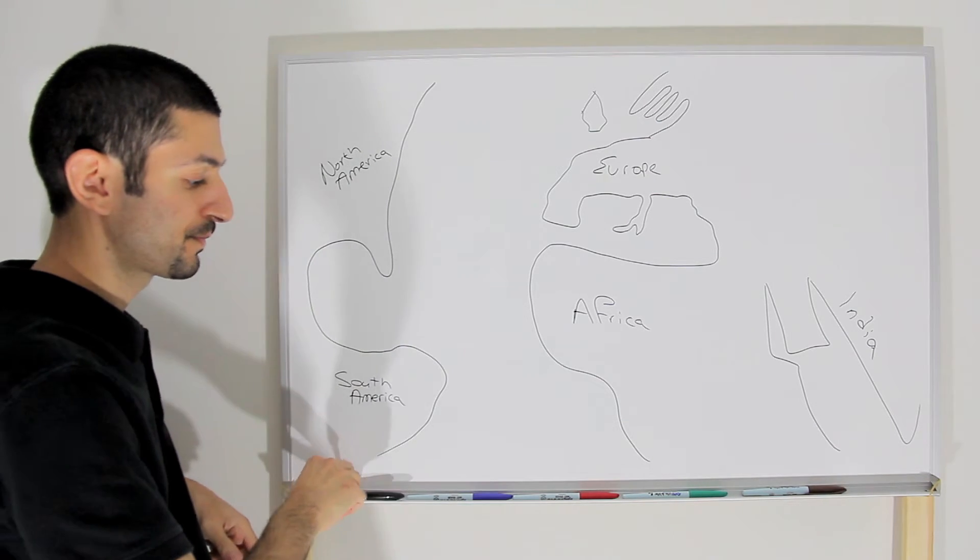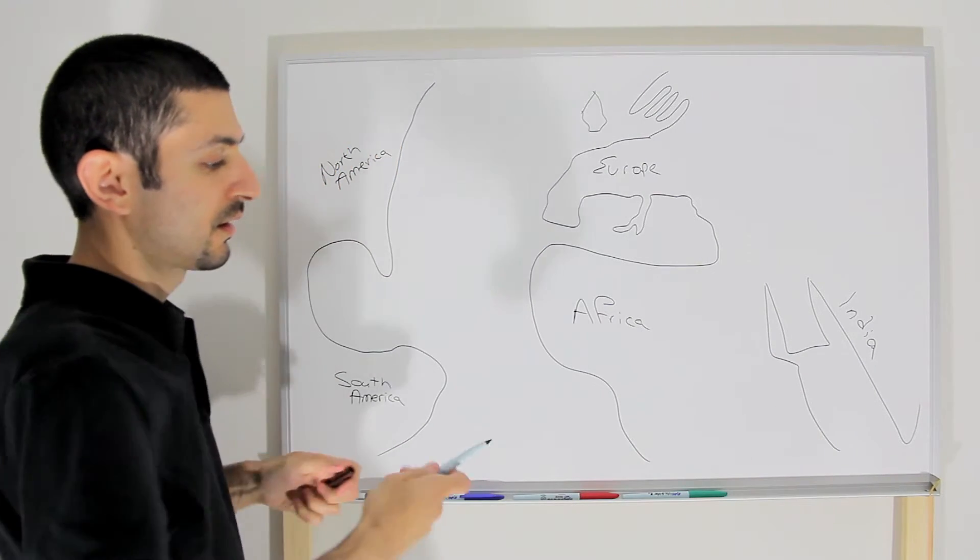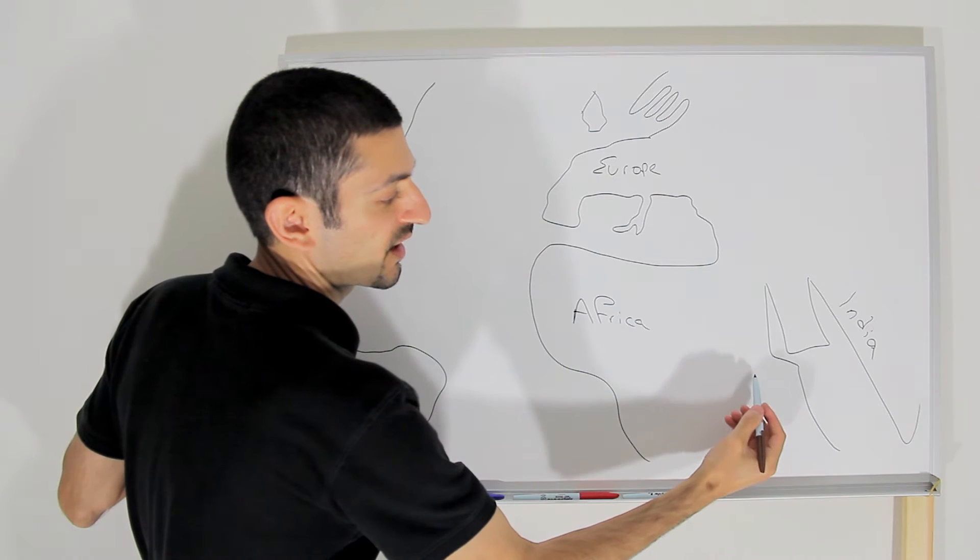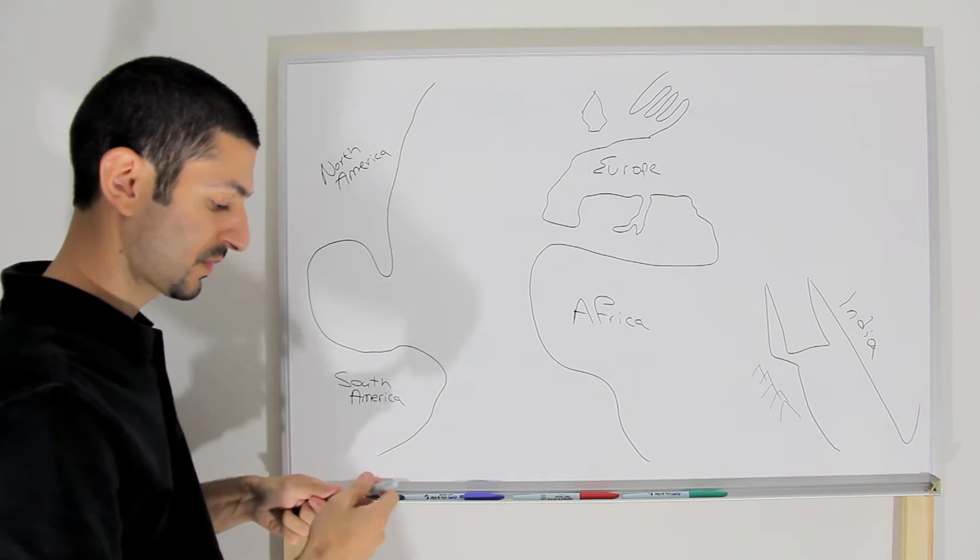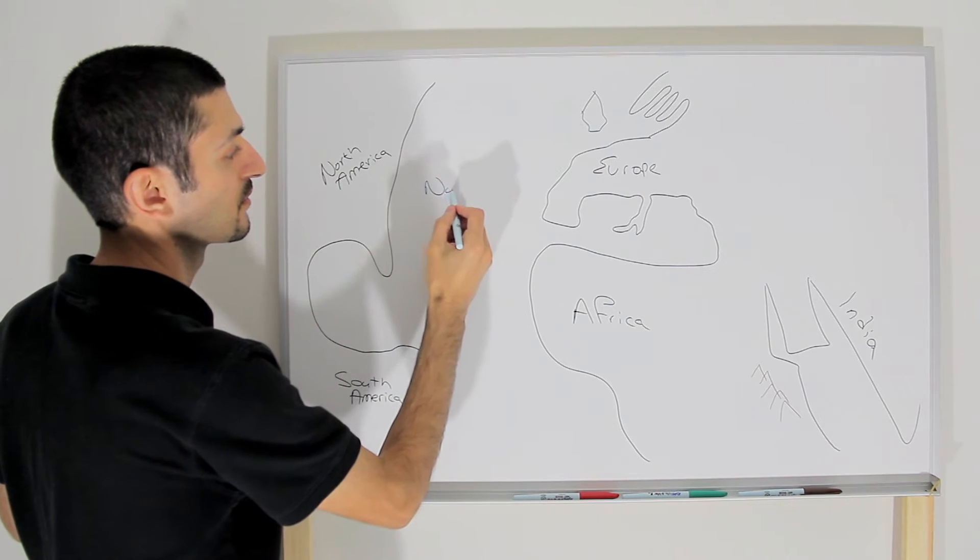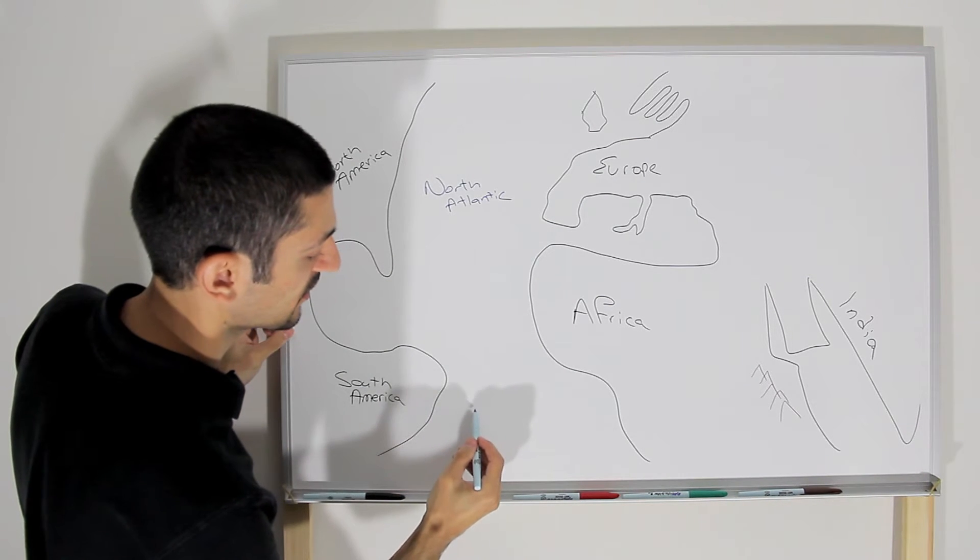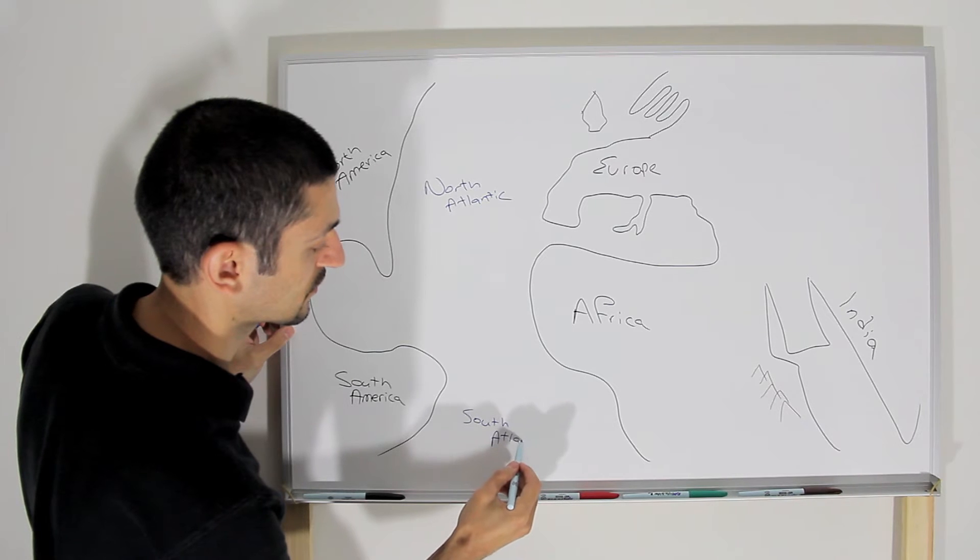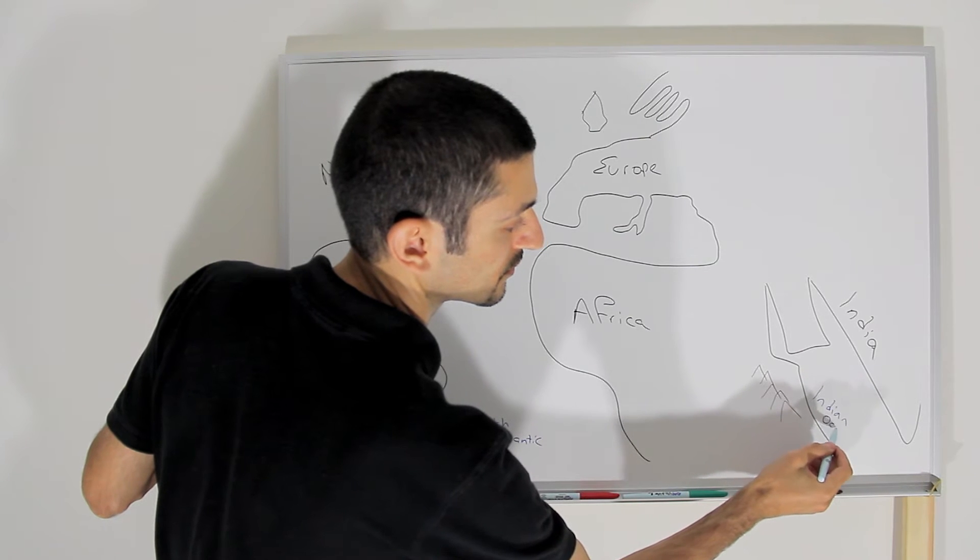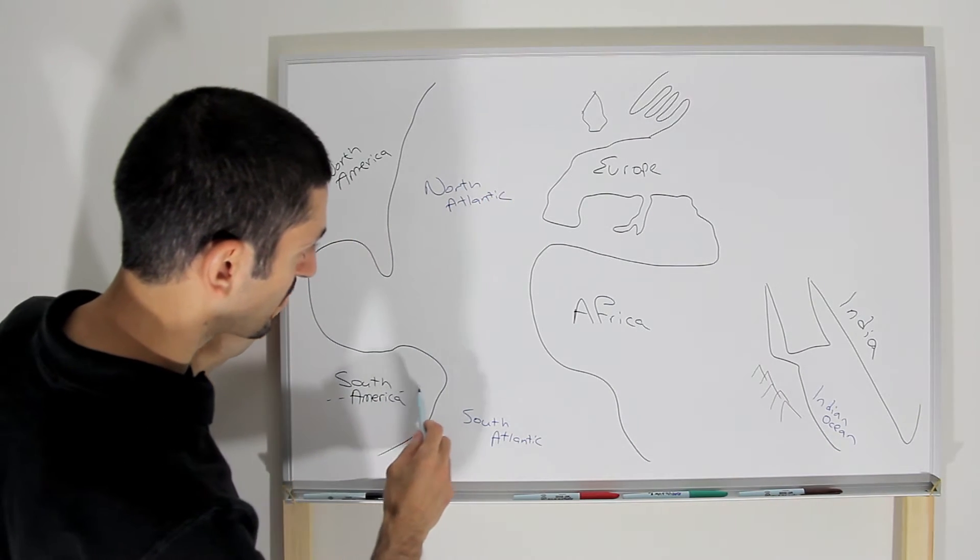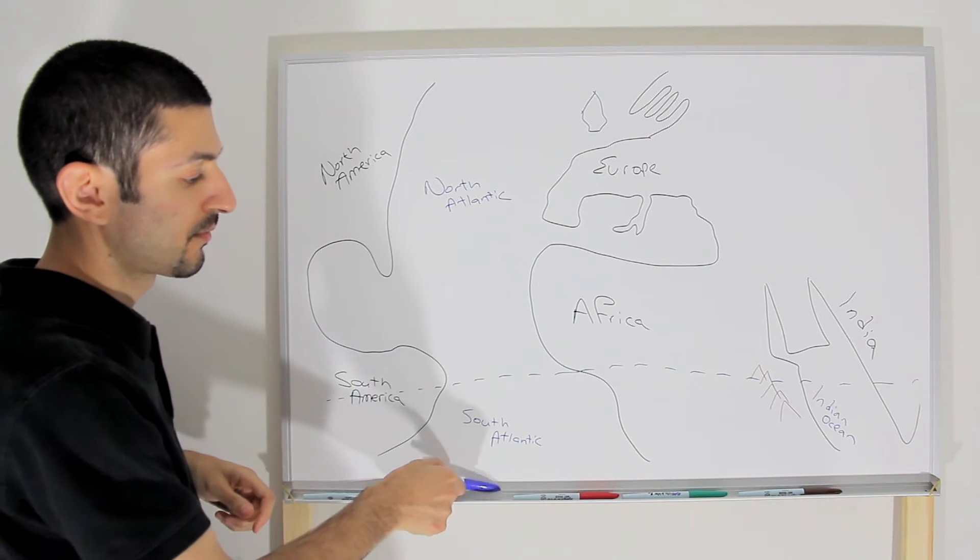Now, down over here, let me use brown. Over here we have the Ethiopian Highlands. And the North Atlantic. South Atlantic. And Indian Ocean. And we're gonna draw the equator right along there.